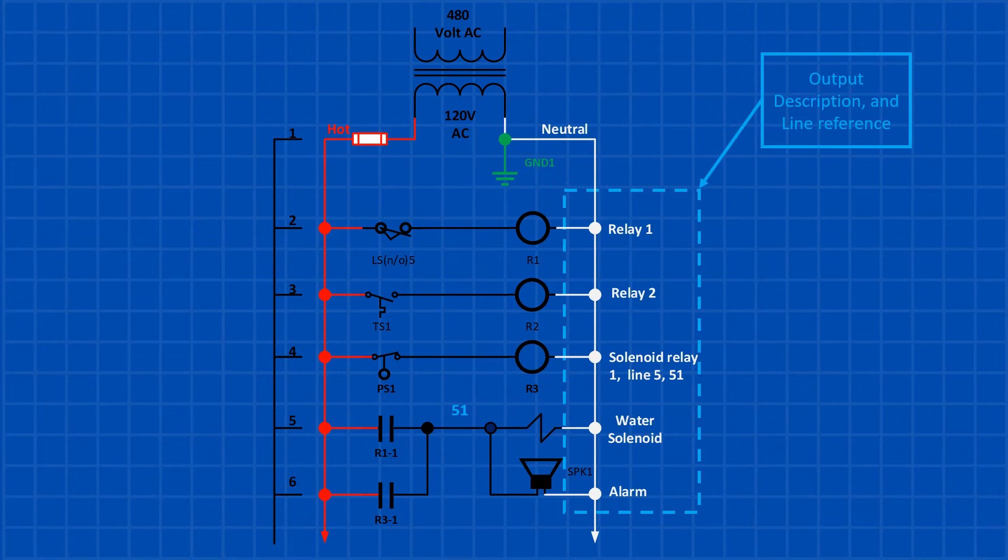Finally, on the right, outside of the ladder, you find a short description of the outputs and if the contact of an output is used in another rung. For example, the information on line 4 shows that the contact from relay 1 is used in line 5 and the wire number is 51.